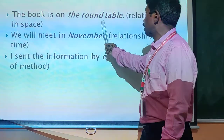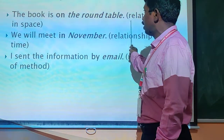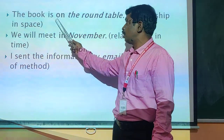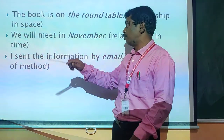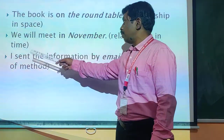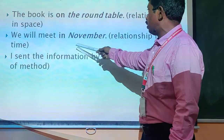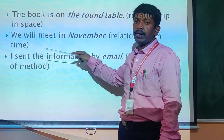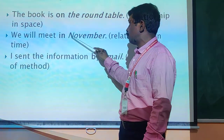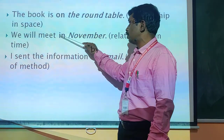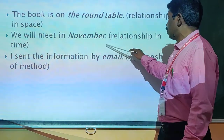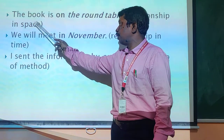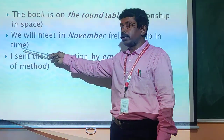The book is on the table. If you remove 'on', there is no proper meaning. The book is on the table — it shows a relationship of space, where it is located. The second example: We will meet in November. Here the preposition is 'in'. When will we meet? We will meet in November. November is a month of the year, so it is a relationship with time.